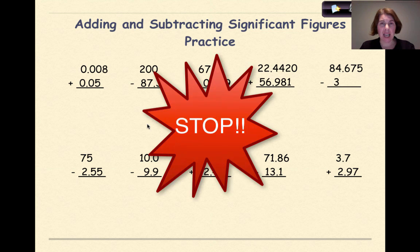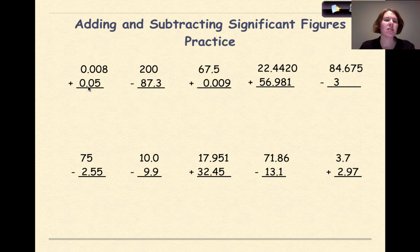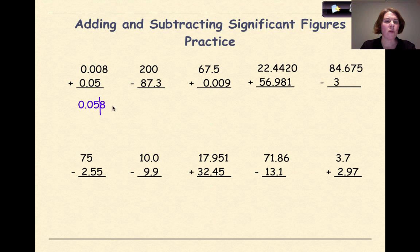Now I'd like you to stop and try the practice problems, and then we'll check your work. Welcome back. In the first one, we have 0.008 plus 0.05. When we add those together, we get 0.058. We can only go out two decimal places, so we have to cut it off and round up. Our final answer is going to be 0.06.